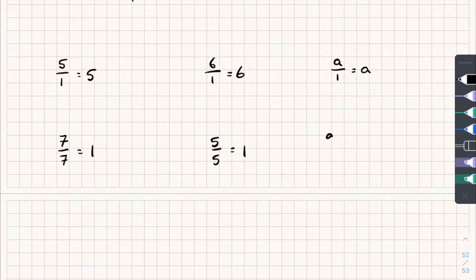Five over five is equal to one, and a over a is equal to one. So it doesn't matter which numbers we use, this is always true.